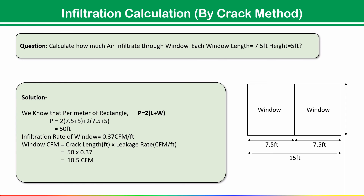The same approach applies to doors: calculate the crack length and use the appropriate leakage rate from the table for single or double doors. This covers the introduction to heat load calculation and infiltration air CFM calculation. If you are interested in complete heat load calculation using HAP software, our Udemy course is available in the description. A coupon code has also been shared — enjoy the complete course. See you in the next one.